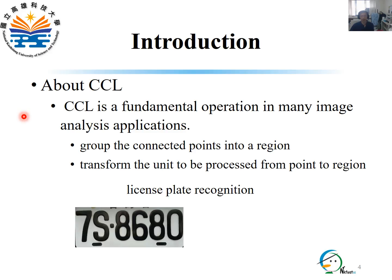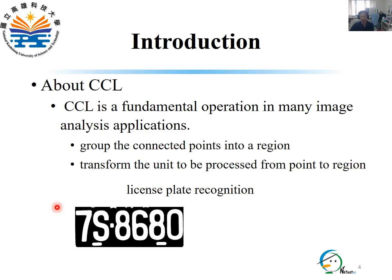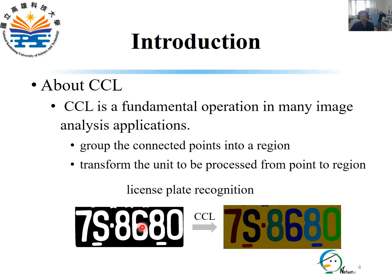CCL is a fundamental operation in many image analysis applications. The objective of CCL is to group the connected points into a region and transfer the unit to be processed from point to region. For example, in the application of license plate recognition, the input image is firstly binarized by thresholding. The white points denote the object points, and black points are background ones. Then, connected component labeling is applied to identify all regions with different colors, followed by the process to recognize each character.